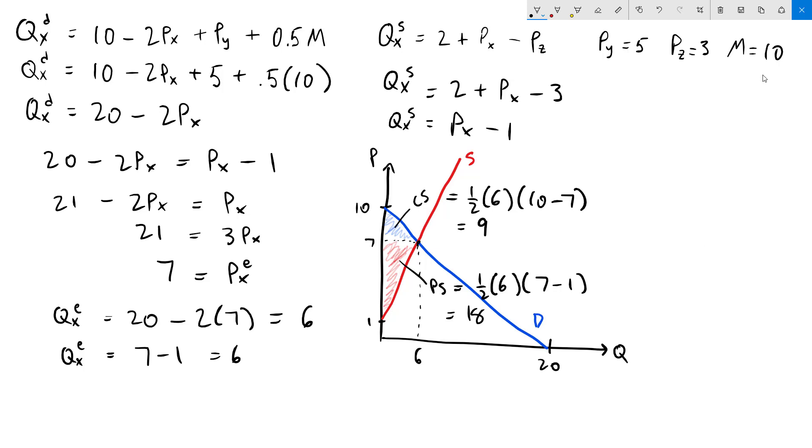The last thing that we'll do here is calculate the own-price elasticity of demand at the equilibrium. The definition of the own-price elasticity of demand is the partial of the demand with respect to the price of x times price of x divided by the quantity of x. To get the partial derivative of the demand curve with respect to price, we'll go back to the original demand curve right here. Notice that there's only one term in here that has a Px in it, and that's this one right here.